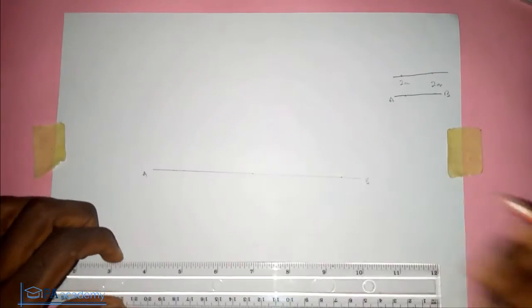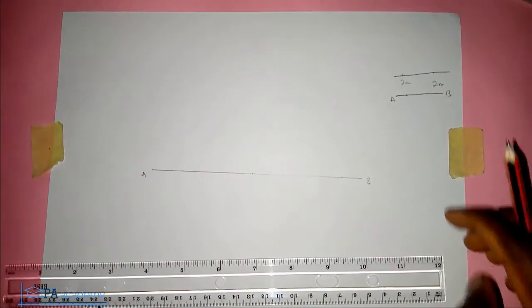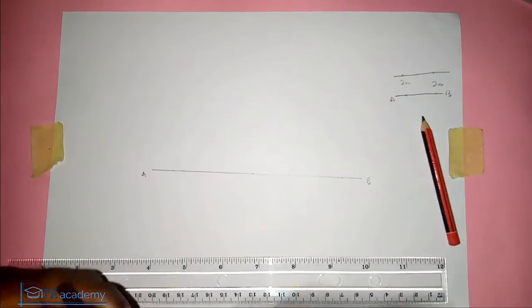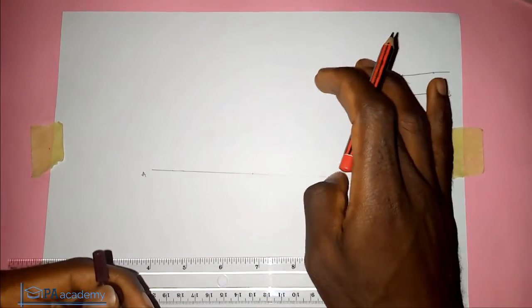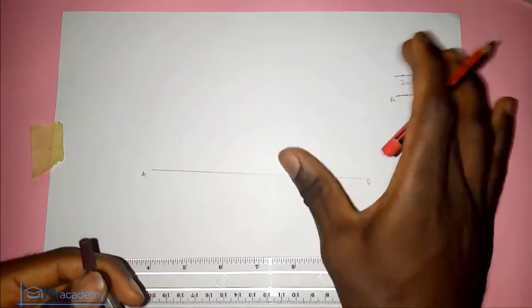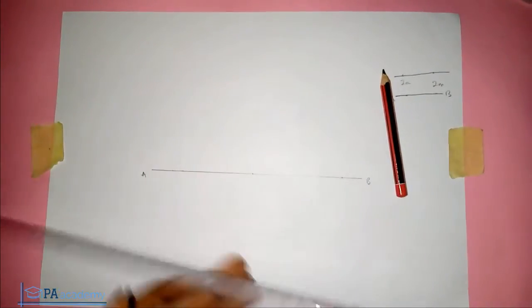Now we pick our compass. Since we want to draw a line that's parallel to line AB at a distance of five centimeters apart, that is 50 millimeters, you pick your compass and measure that distance which is five centimeters.